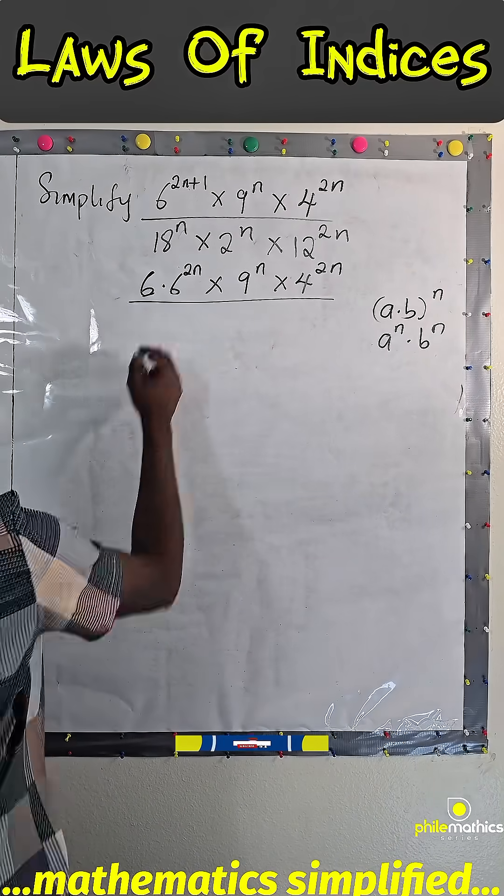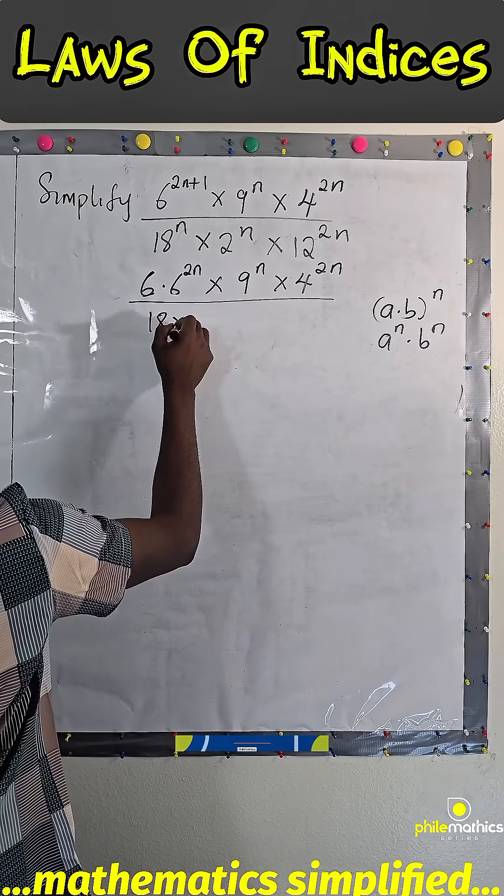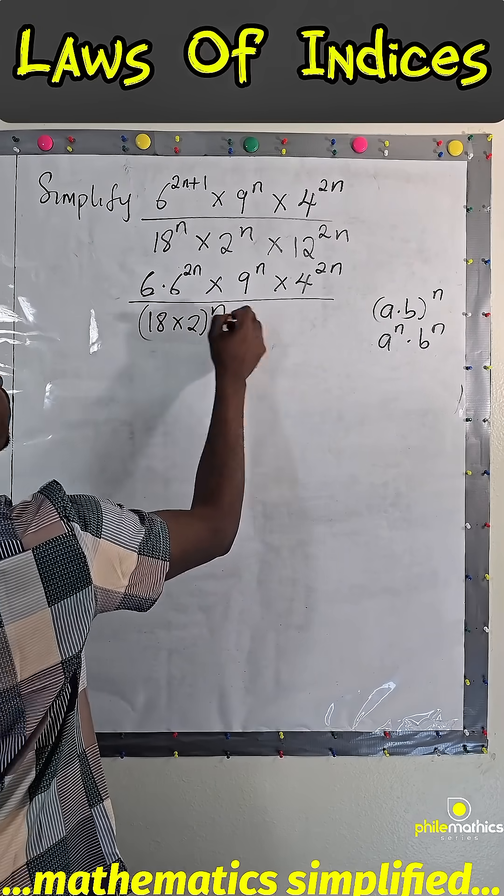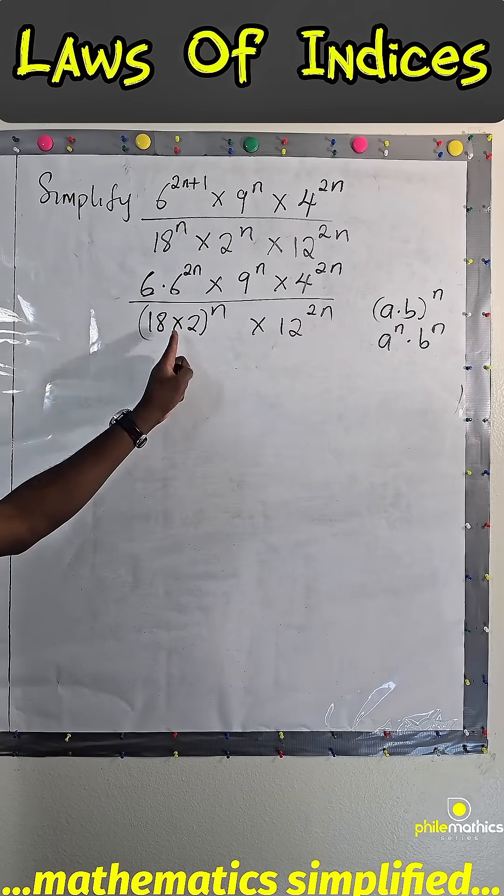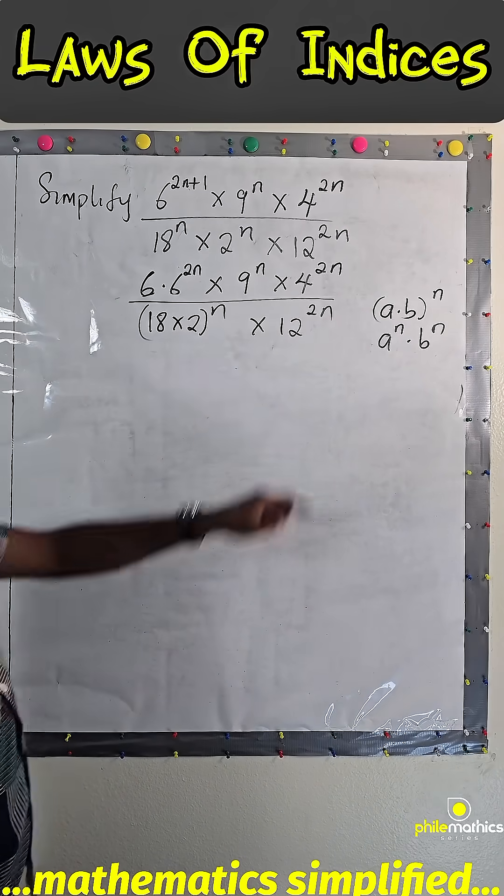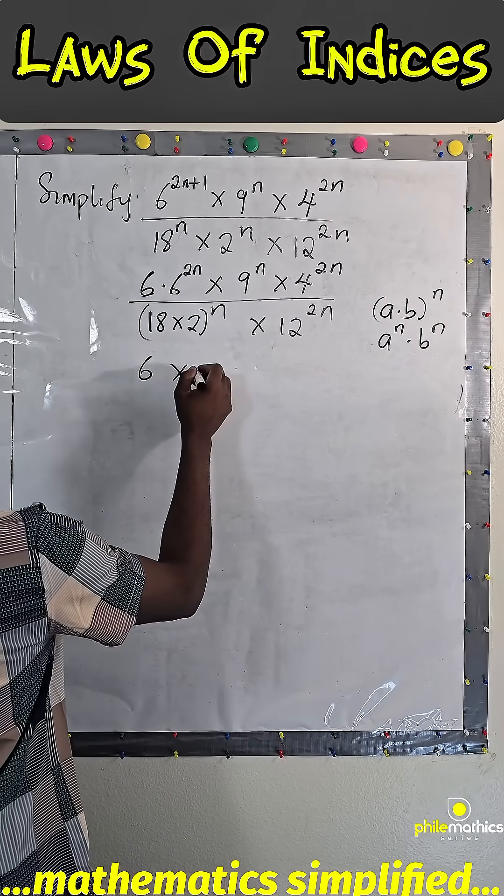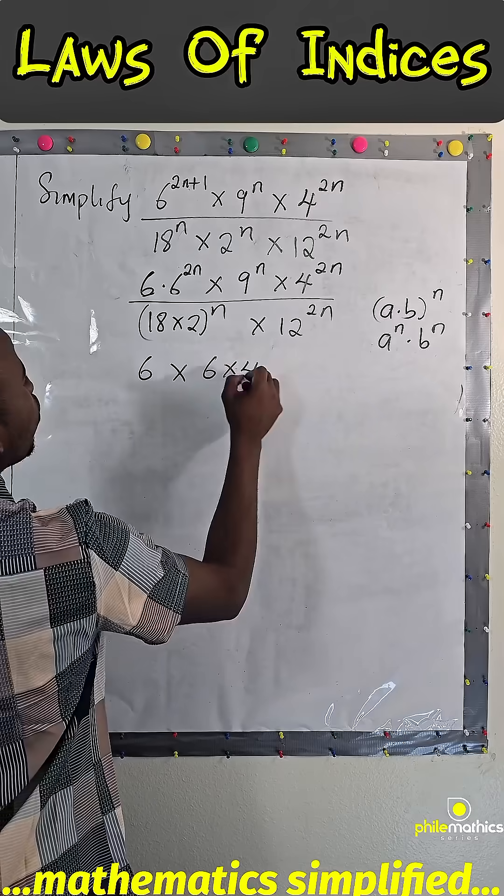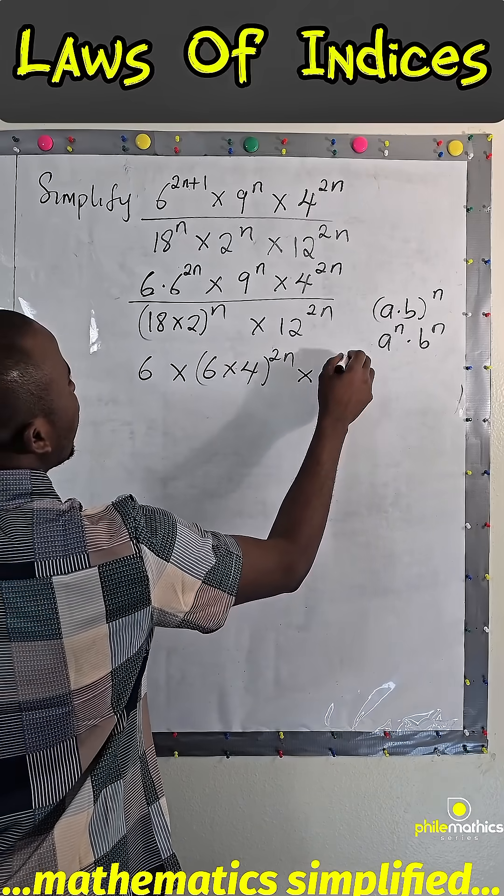both n, we'll have 18 times 2 is 36 to power n times 12 to power 2n. The same thing we did here we will do it here again, and so we will have 6 times 6 times 4 to power 2n times 9 to power n